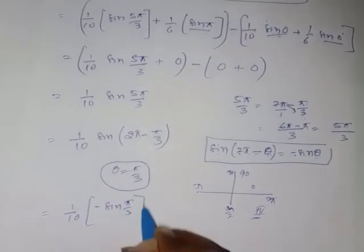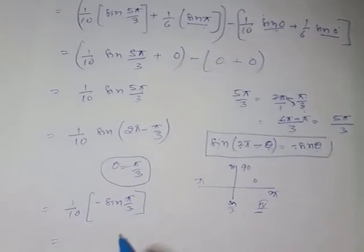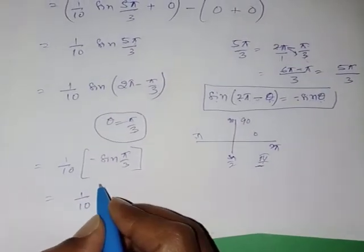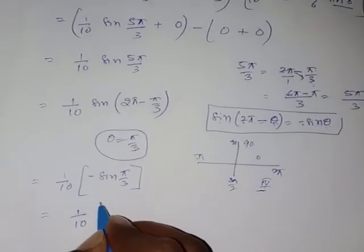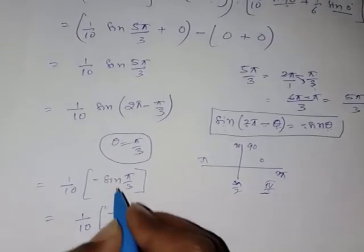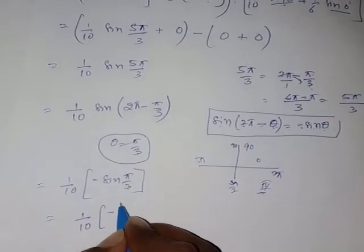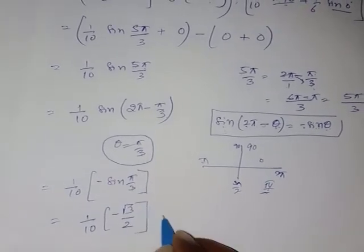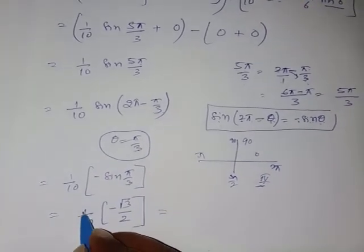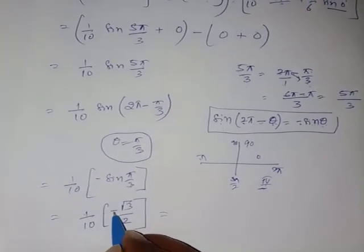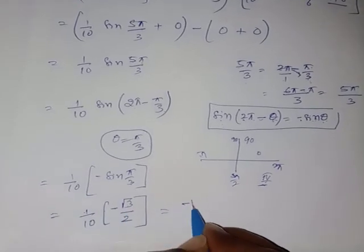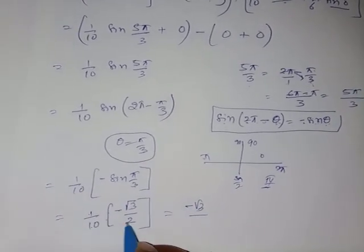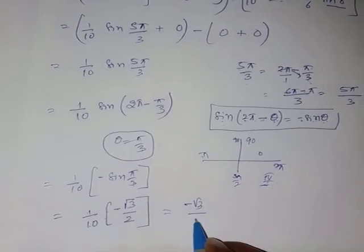sin(π/3) = √3/2. So the result is (1/10) · (−√3/2) = −√3/20. The final answer is −√3/20.